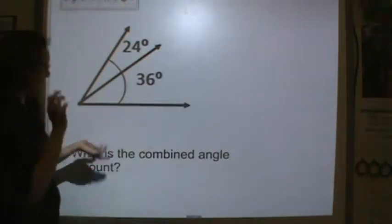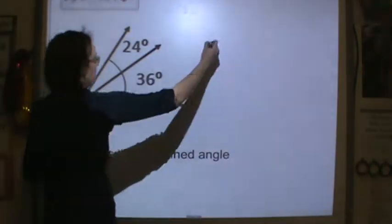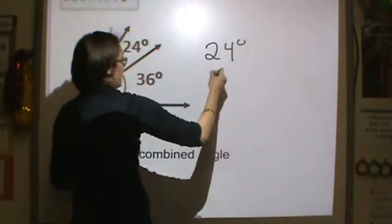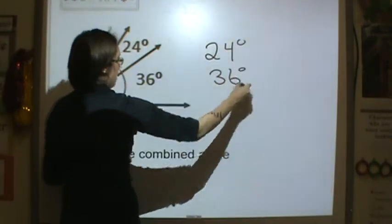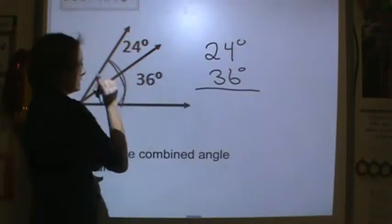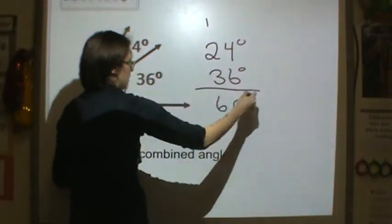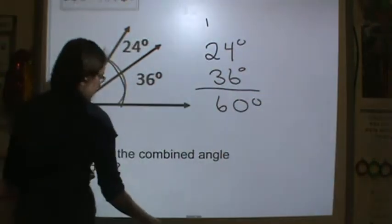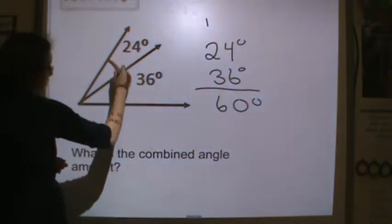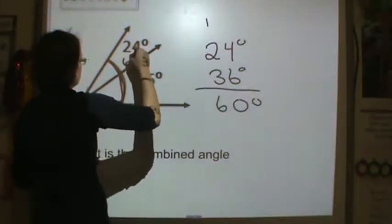Here's another one. What's the combined measurement? You have 24 degrees and 36 degrees. All you do is combine them or add them. So you get a total of 60 degrees. This entire angle together is 60 degrees.